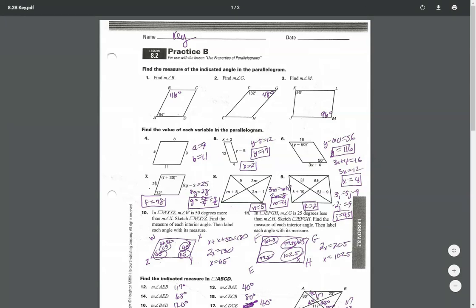Okay, this is Practice 8.2B, the answer key for properties of parallelograms. Problems 1, 2, and 3 involve finding the measure of angles. Remember the opposite sides of a parallelogram are parallel, so you can use same side interior angles and alternate interior angles.